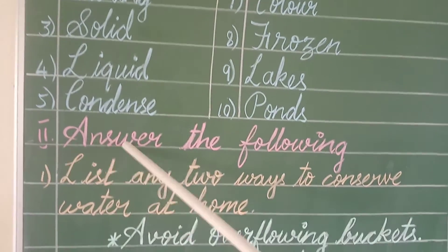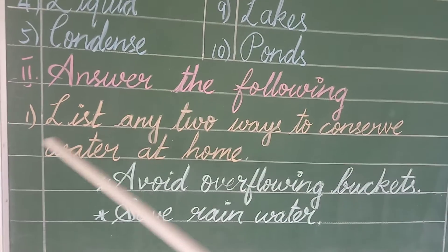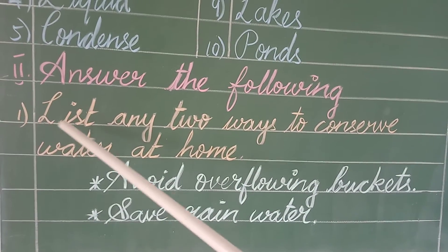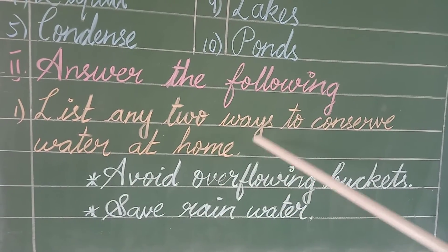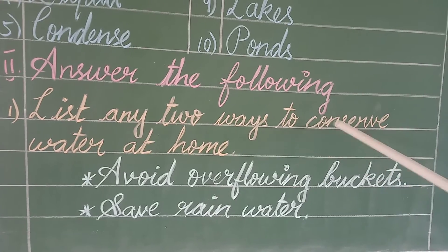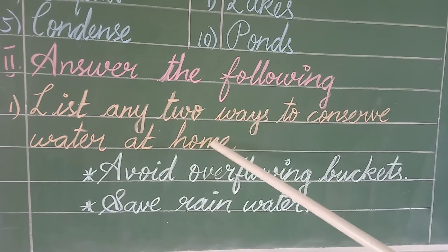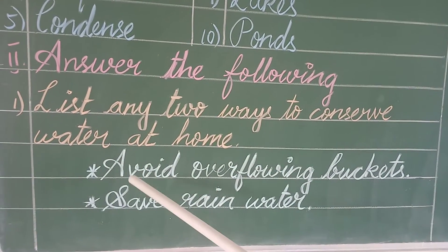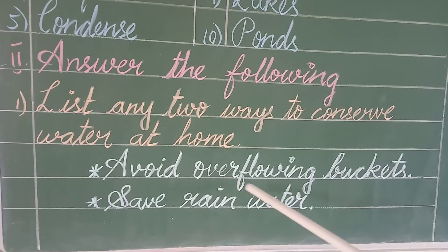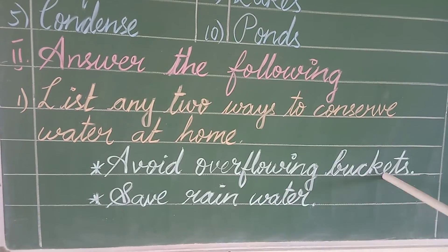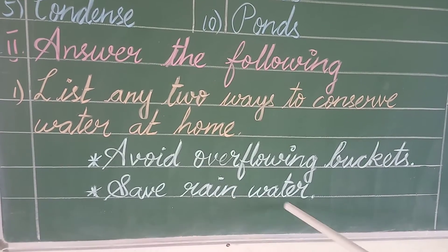Second Roman: answer the following. First question: list any two ways to conserve water at home. Answer: avoid overflowing buckets, save rainwater.